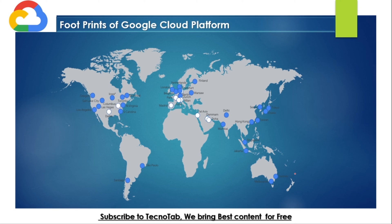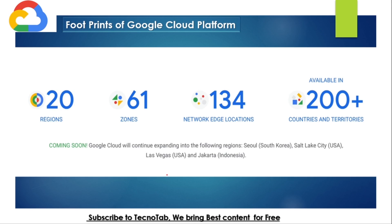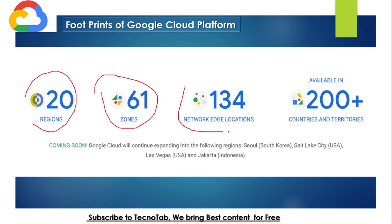Google is one of the hyperscale infrastructure providers and its footprint is spread across the globe. You can see these dots here — these represent the availability of Google Cloud Platform across regions in America, Europe, Asia, and everywhere. Google currently has 20 regions, 61 zones, 134 cloud edge locations, and its customers are spread across more than 200 countries and territories.